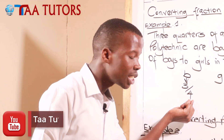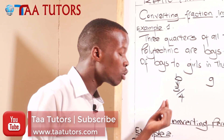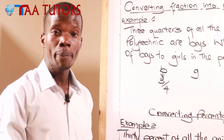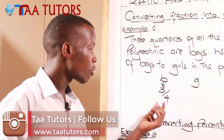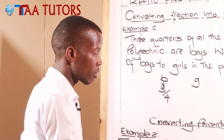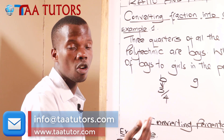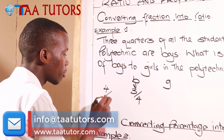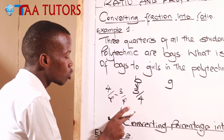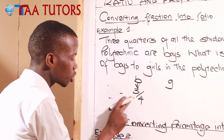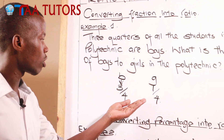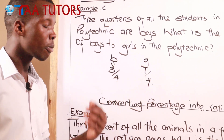We use the denominator to get the total fraction. The denominator here is four, so the total fraction is four over four. The fraction of girls is four over four minus three over four, which gives us one over four. So the fraction of girls is one over four.